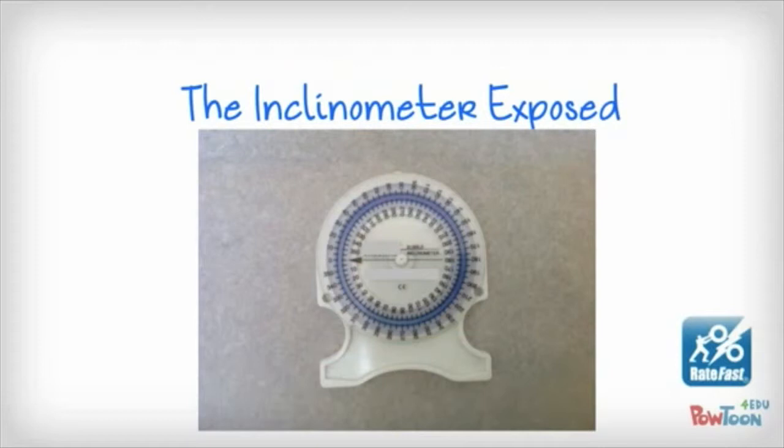The inclinometer is a device that basically functions like a level. It has a water and oil interface of two fluids, and they're usually blue and white, and it's at that interface that the reading is taken as the spine moves through its motion.